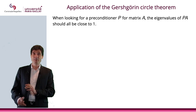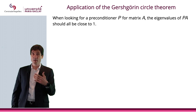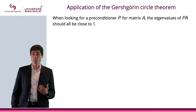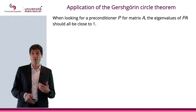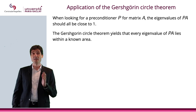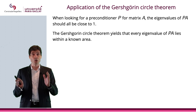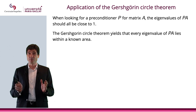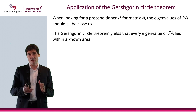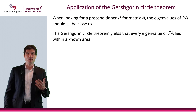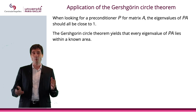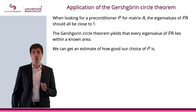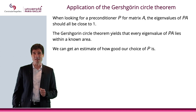You can already see a possible application for the Gershgorin circle theorem, which relates to what we discussed in a previous video. When looking for a preconditioner P of a matrix, you want the eigenvalues of PA to be as close as possible to 1. The Gershgorin circle theorem will tell you an area where they can be located. It won't give you the eigenvalues exactly, but it may be helpful in determining where they can possibly be, giving you information about whether PA has eigenvalues close to 1, and therefore allowing you to estimate how good your choice of preconditioner P possibly is.